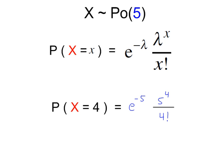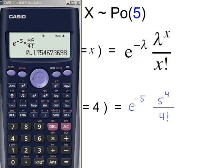To work out the probability that 4 particles are emitted in a 1-second interval, we calculate P(X = 4). Using the formula: e to the power of minus lambda, where lambda is 5, times lambda to the power of x where x is 4, divided by x factorial where x is 4, which gives 0.175.